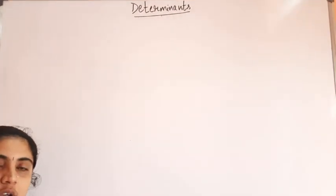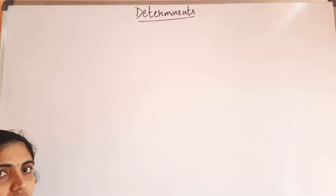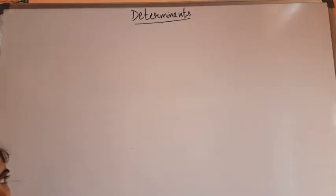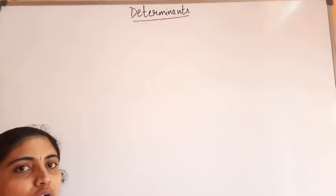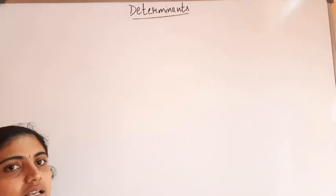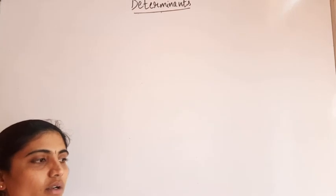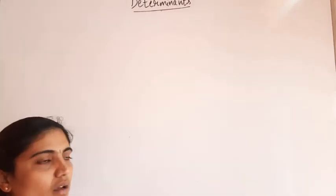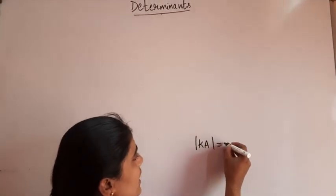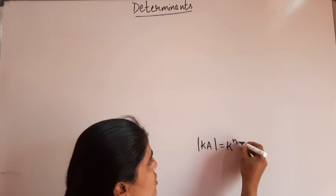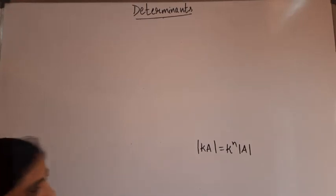Good morning everyone. In the last class we completed problems based on determinants of third order. We solved two important results: determinant of 2A equals 4 times determinant A, and determinant of 3A equals 27 times determinant A. We also wrote an important note: determinant of K times A equals K to the power N times determinant A, where K is any scalar and N is the order of matrix A.